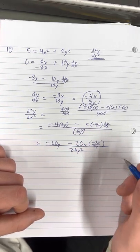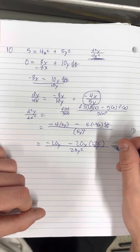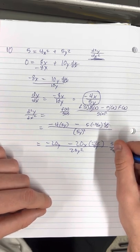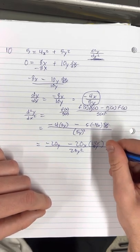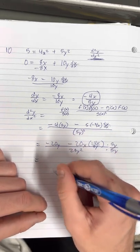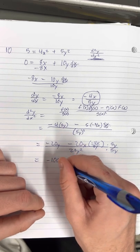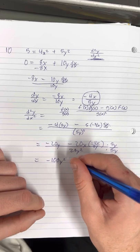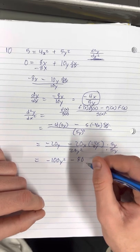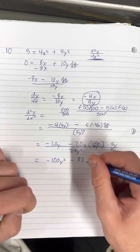Now the next thing we do is multiply the top and bottom by 5y, so 5y over 5y. That's going to give you negative 100y squared minus 80x squared.